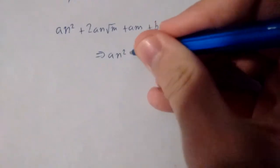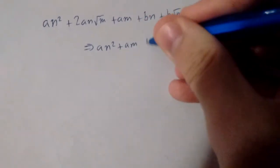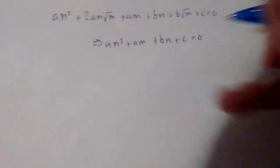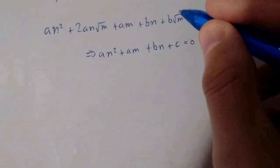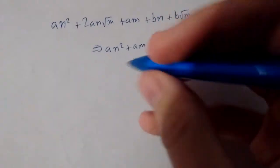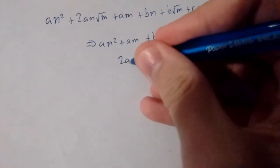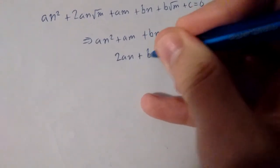We get a n squared plus a m plus b n plus c equals 0. I can divide out the root of m and we get 2 a n plus b equals 0.